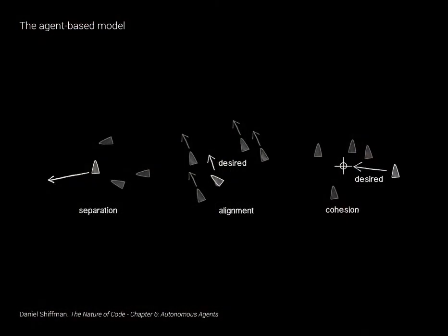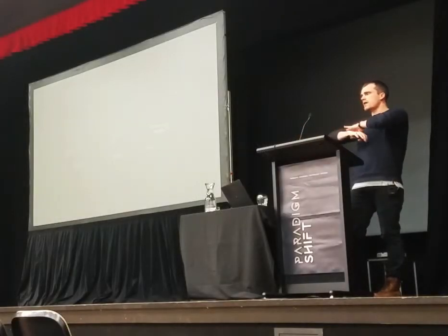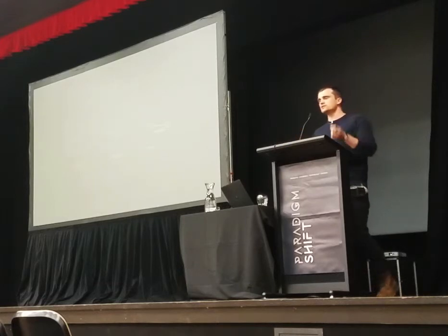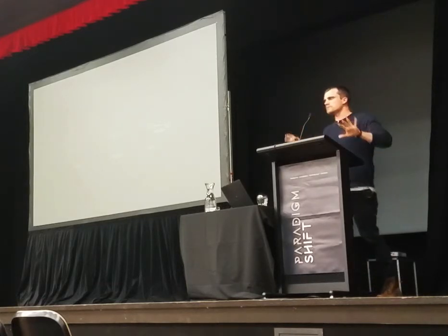Here you see three basic rules that dictate flocking behavior in a simulated system. There's a separation rule where the agent keeps its distance so as not to collide with the rest of the population. There's an alignment rule where the agent slowly changes heading to line up with its neighbors. And there's a cohesion rule where, if far away from the crowd, the agent drifts toward the other agents. Each agent only has local information about its immediate area.